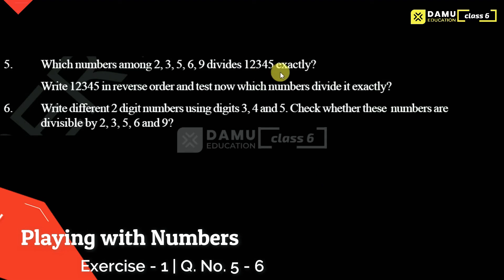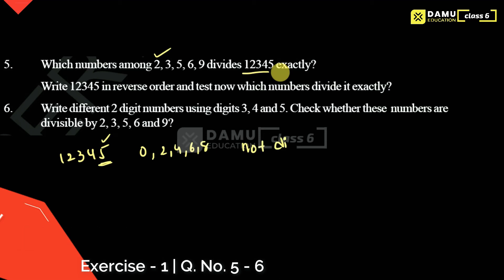So let's take the number 12345. We have to check divisibility rules for this number. First, check divisibility by 2. For the rule of 2, the units place digit should be either 0 or an even number — 2, 4, 6, or 8. Here the units digit is 5, so 12345 is not divisible by 2.